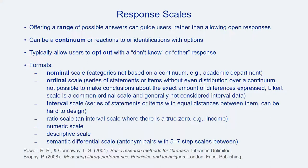Another common structure for fixed choice survey questions are scales. Scales give a range of possible answers that respondents can select, and are often arranged on a continuum. Typically users are allowed to opt out with an 'I don't know,' 'not applicable,' or other response. Not allowing opt-out choices for scale formatted questions can force respondents to answer inaccurately or inauthentically, increasing their frustration and decreasing the validity of their responses. There are many different versions of scale questions. Some scales are ordinal, so the elements are in order with a relative position, but not separated by a clear and fixed difference.